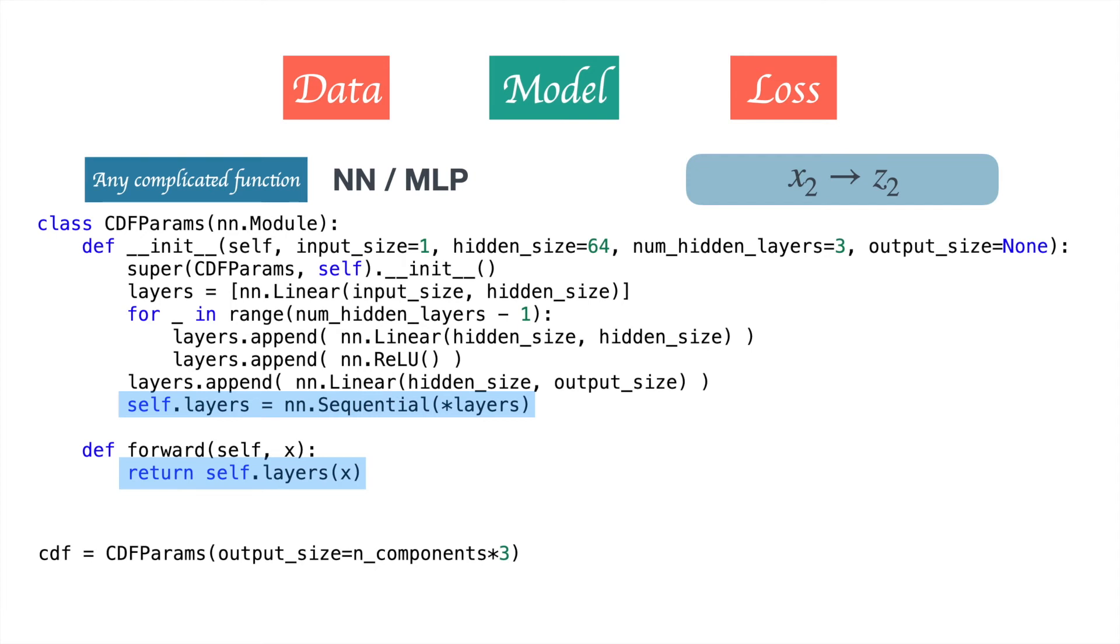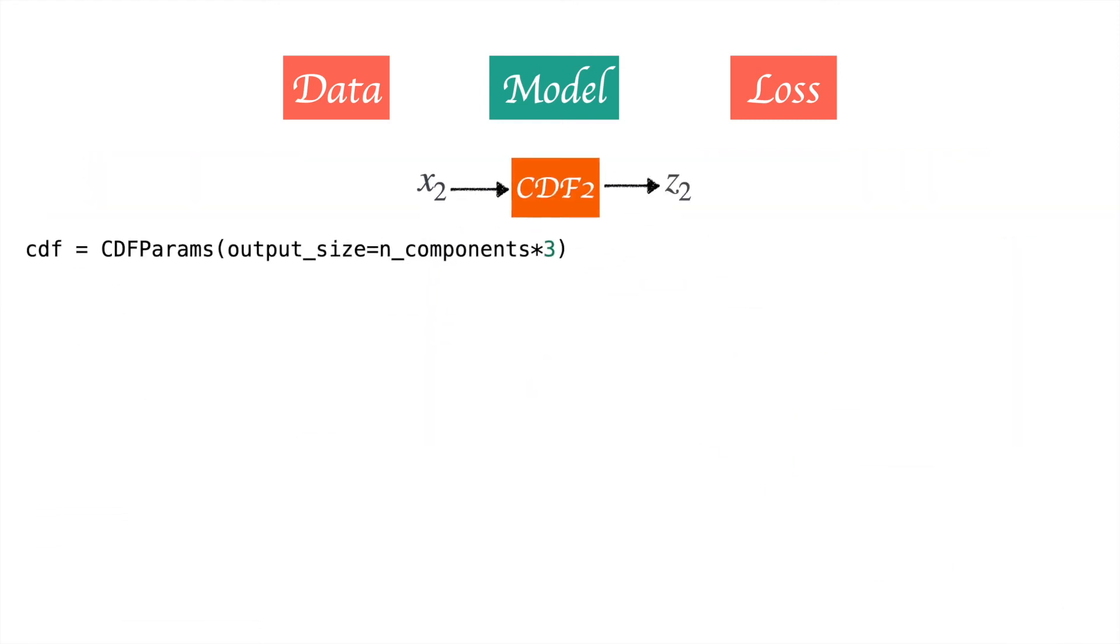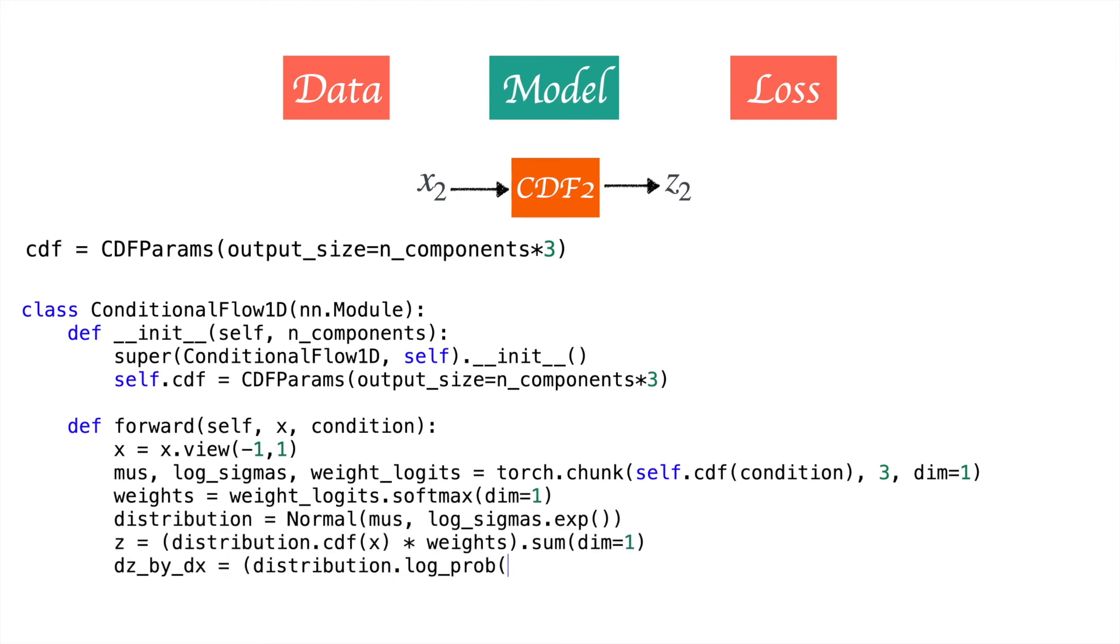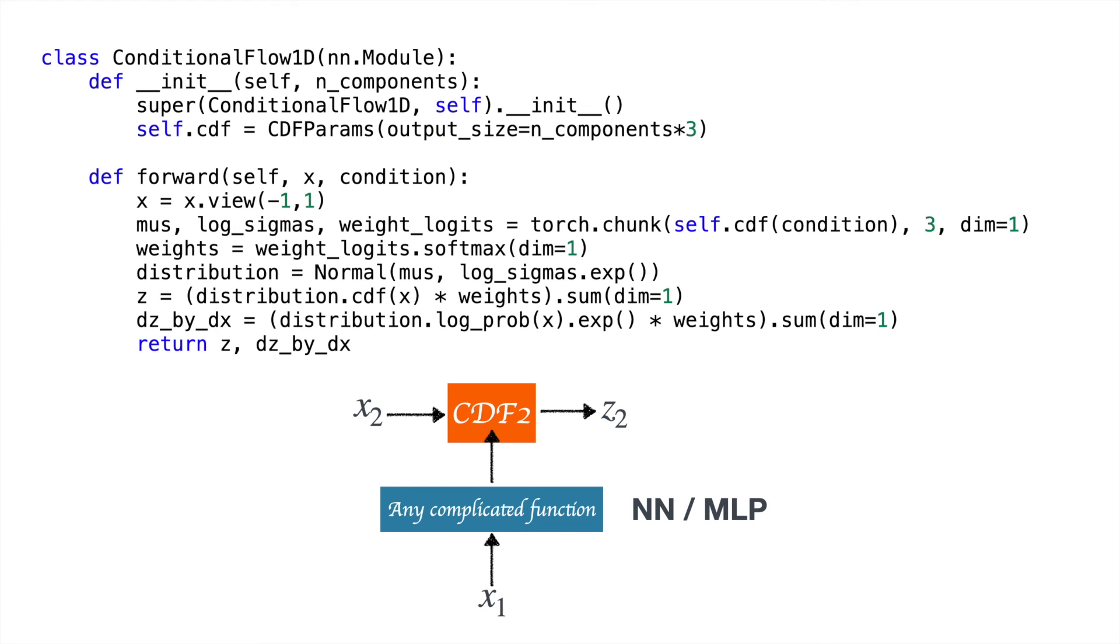These two parts highlight the function definition and its execution. Once we have defined a CDF, we can define the conditional flow which is conditioned on x1, of which one parameter is the CDF params which we just defined. The output of CDF params is used to define the mus, sigmas, and weights to be used to map x2 to z2. So CDF params is the function which takes x1 as input - it is conditioned on x1 - and it spits out mus, log sigmas, and weight logits which are used by CDF2, which maps x2.